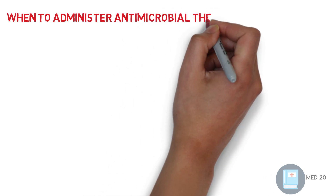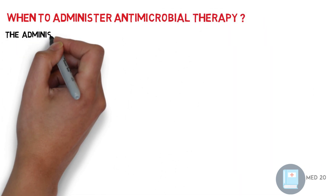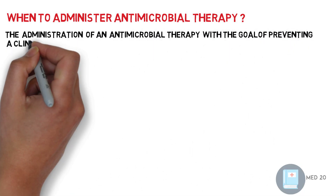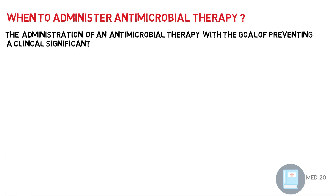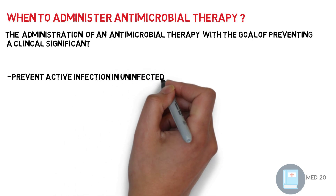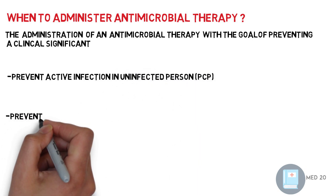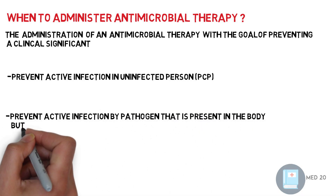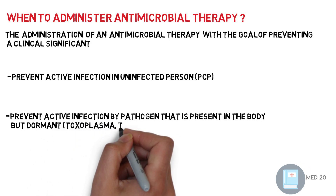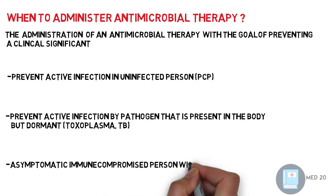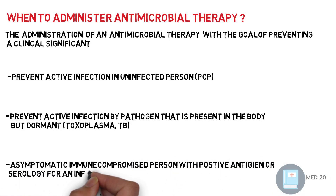So when is antimicrobial therapy administered? The administration of antimicrobial therapy is with the goal of preventing clinical significance in one of these three scenarios: either to prevent an active infection in an infected person, like in PCP; to prevent an active infection from a pathogen that is present in the body but dormant, like toxoplasmosis or tuberculosis; or in an asymptomatic immunocompromised person with a positive antigen or serology for an infection, like cryptococcus.